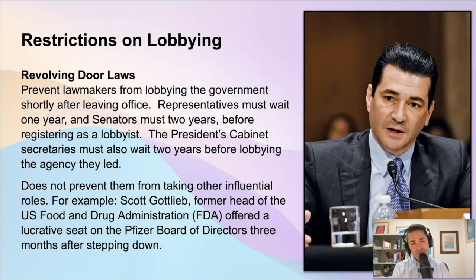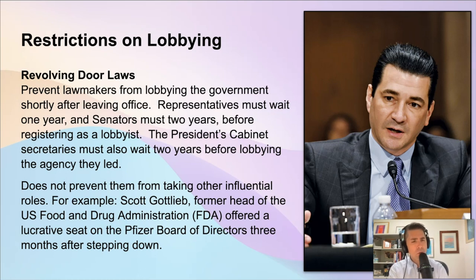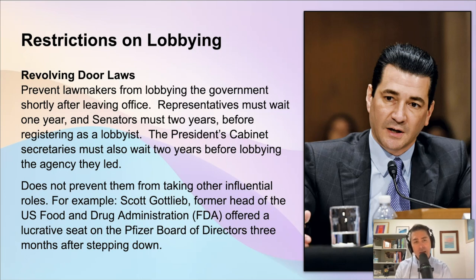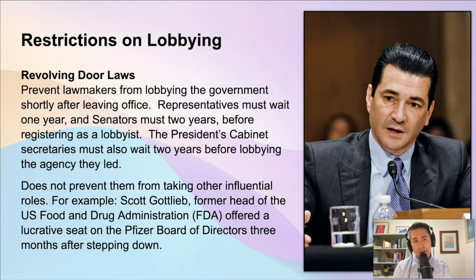There are also rules about so-called revolving doors. When you work in Washington, D.C. at a high level, you make a lot of connections, and it seems unfair to use those connections immediately after leaving office. So there are rules about former members of Congress and senators registering as lobbyists. If you're in the House of Representatives and leave your seat, you have to wait at least a year before becoming a lobbyist. Senators and executive cabinet members must wait two years. This is called a cooling off period — it's not fair to immediately start talking to your former colleagues on behalf of a major corporation.